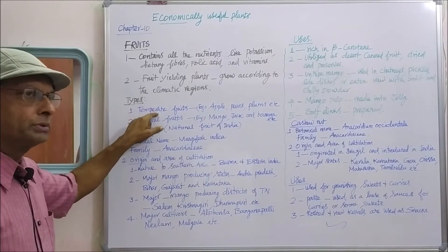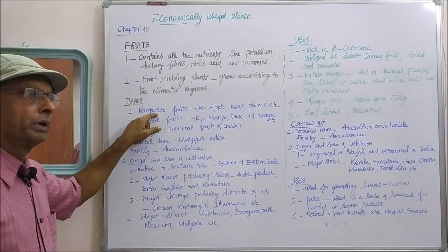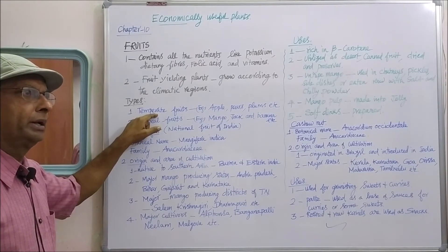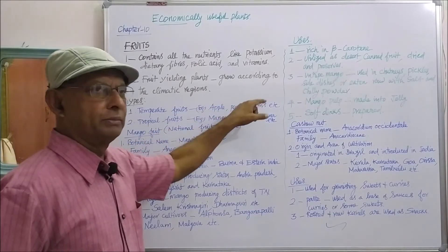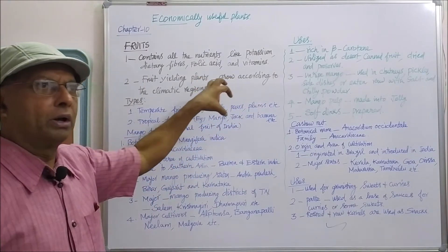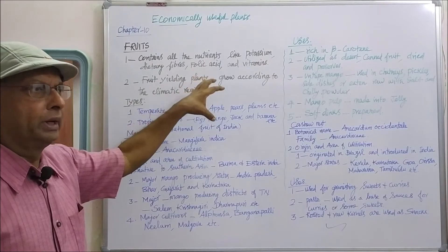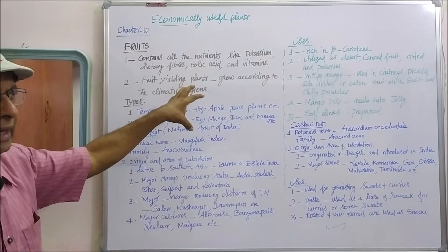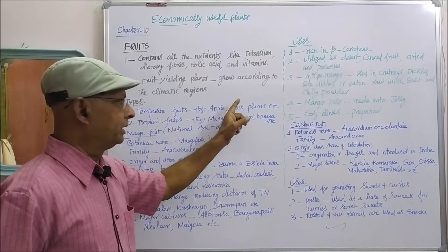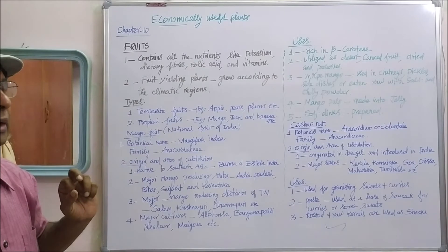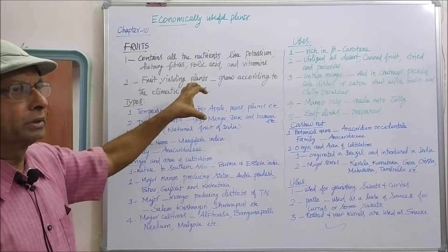Temperate fruits — the fruit yielding plants which grow in cold countries like America. For example, apple, pears, plums, etc. — they are all cold climate fruits. Apple yielding plants, pear yielding plants, and plum producing plants will grow in the cold countries.